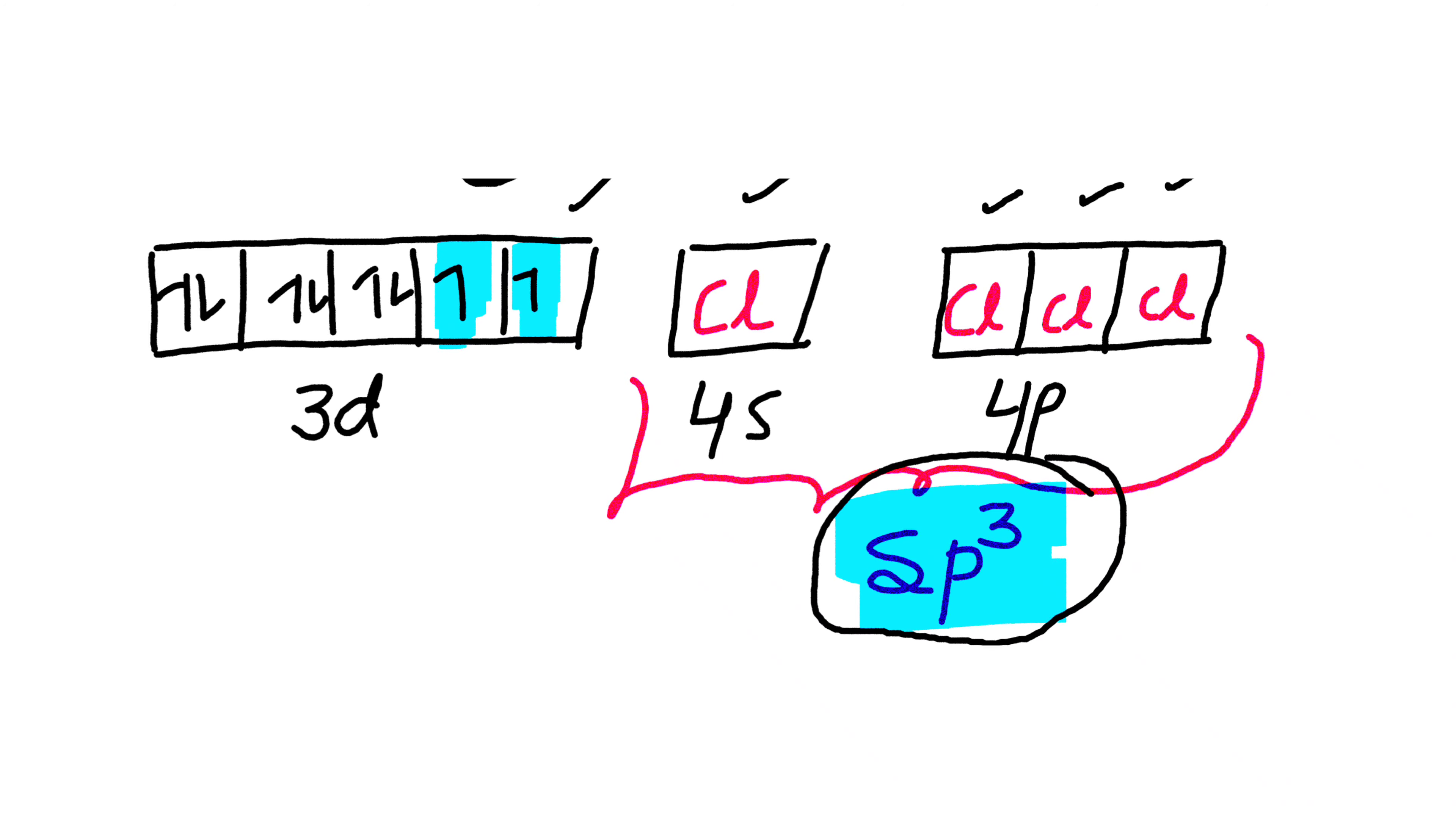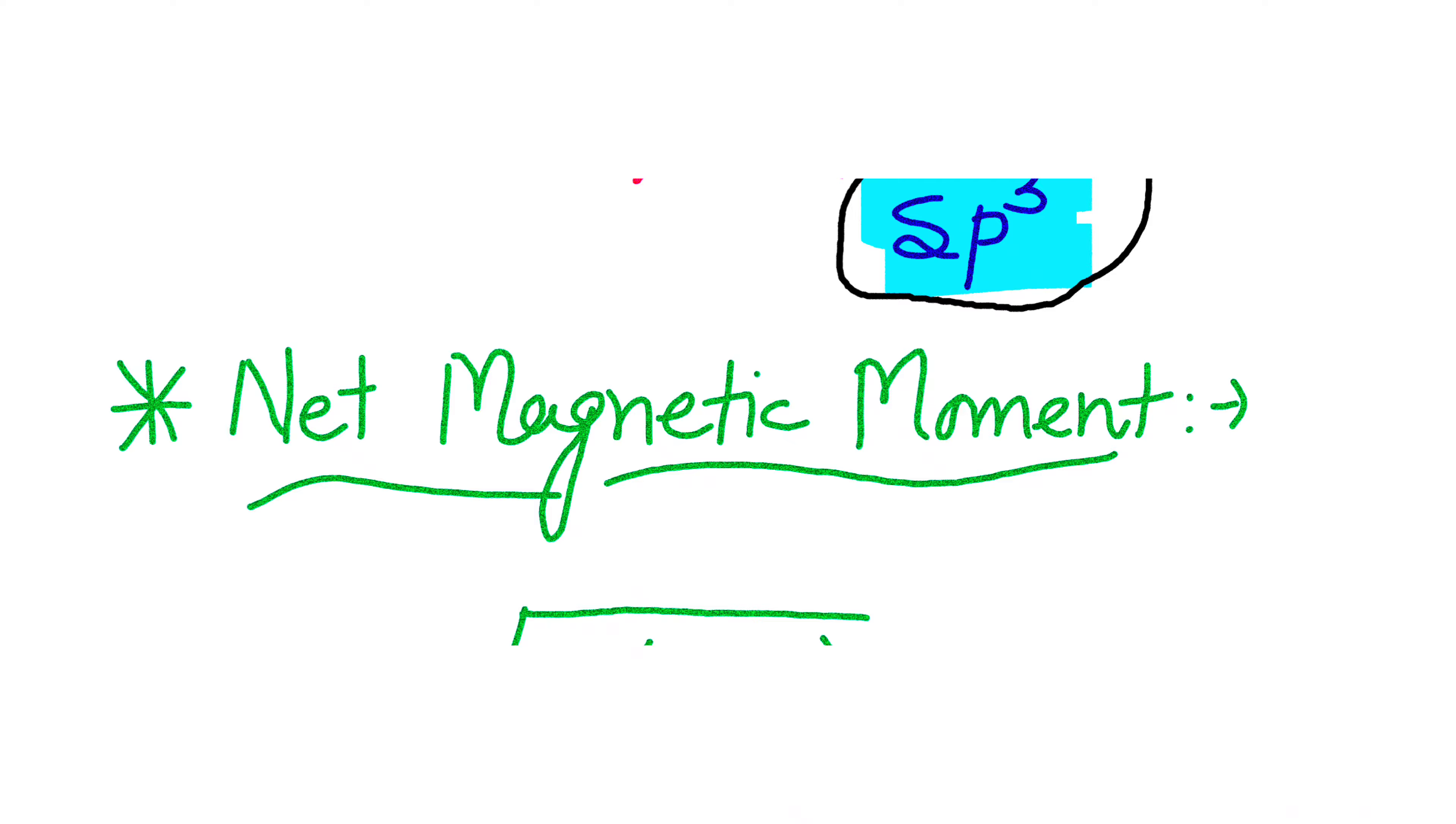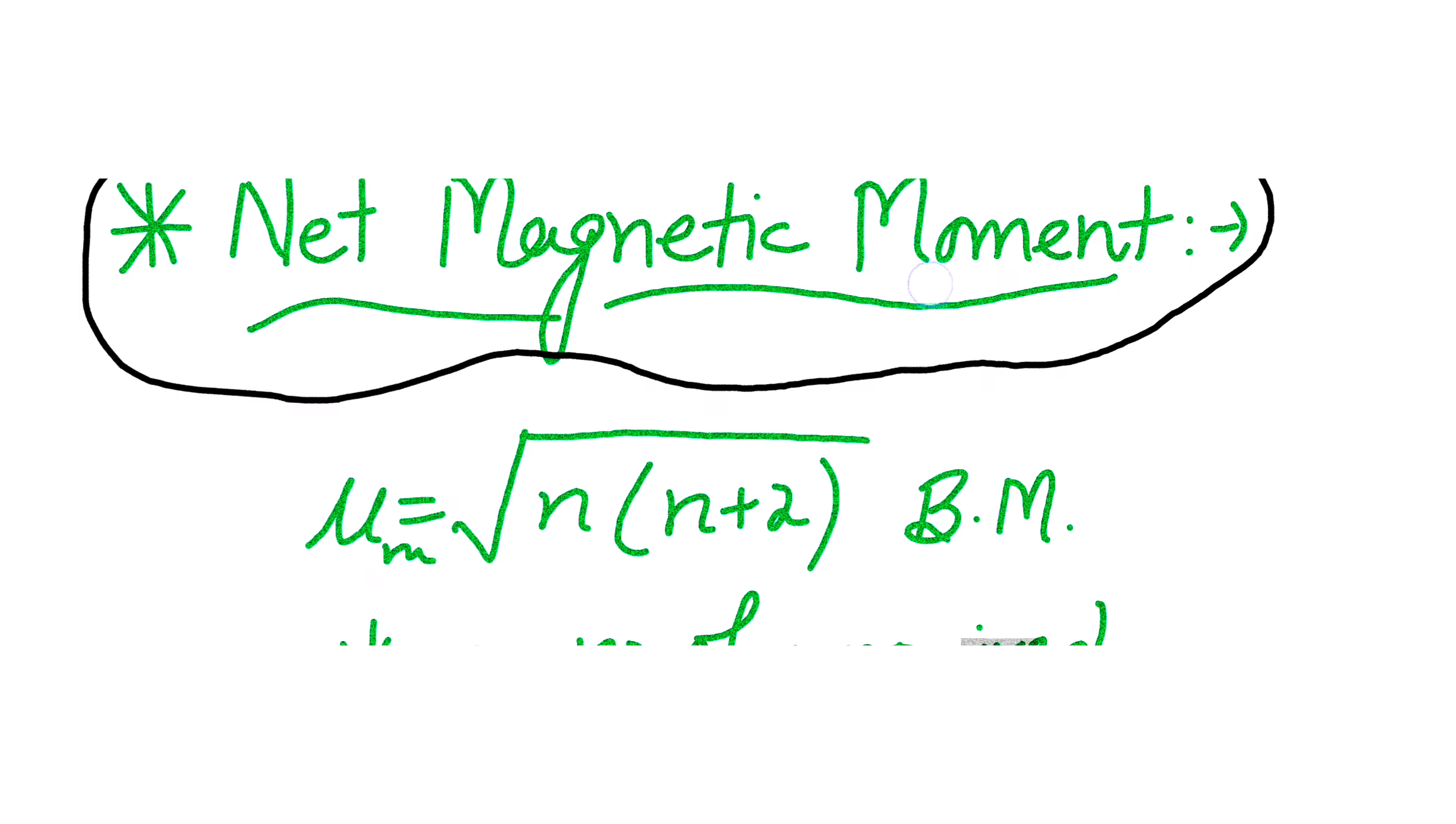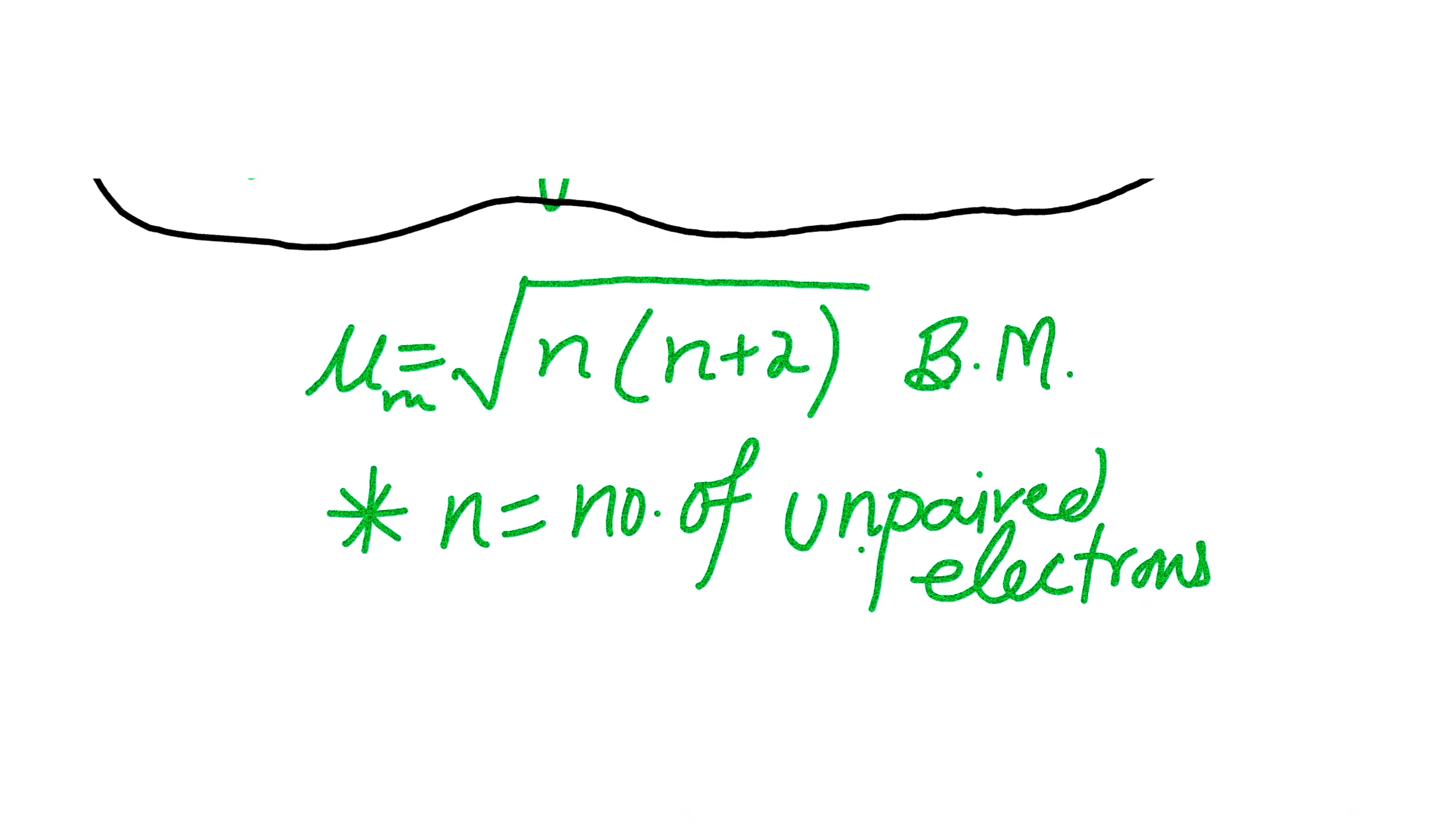So the hybridization will be sp³ hybridized. Nickel in this complex NiCl4 2- will be sp³ hybridized. Now let's find the net magnetic moment of this molecule. We know that the formula for calculating net magnetic moment is given by under root of n(n+2) Bohr magneton, where n is the number of unpaired electrons.